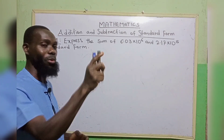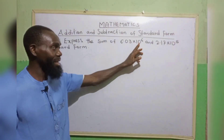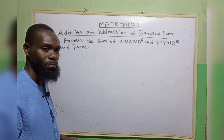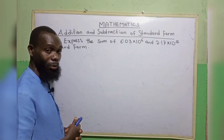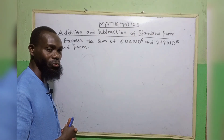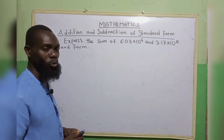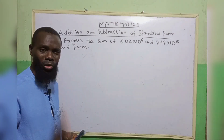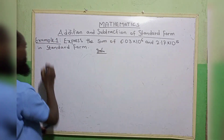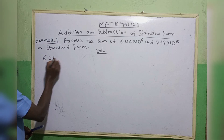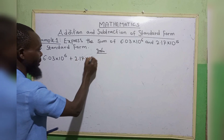And secondly, when we are moving our points to the back, the 10 is going to have a power of negative. But when you are moving the points forward, the power of 10 is going to be positive. So to sum up, we can do it in two forms. The first way is by changing everything into ordinary number. We have 6.03 times 10 to the power 6 plus 2.17 times 10 to the power 5.